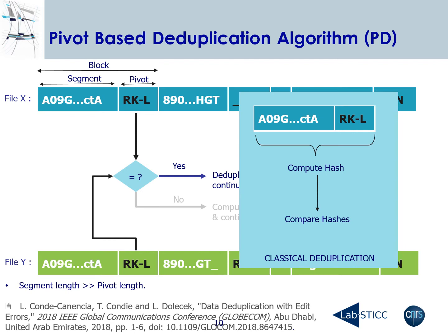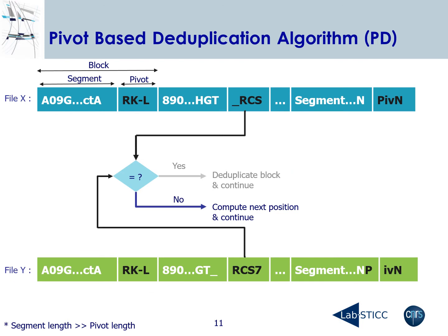Here we can see a quick comparison with classical deduplication using hashes, where a hash is computed using the entire block and then compared to others. This technique increases the computational complexity compared to PD, where only the pivot has to be compared. Going back to the PD algorithm, if pivots don't match, the position of the next pivot is computed and the algorithm continues its execution.